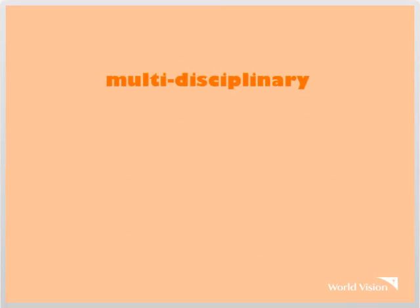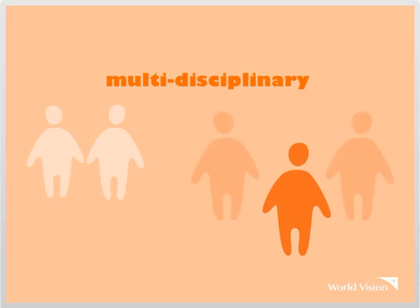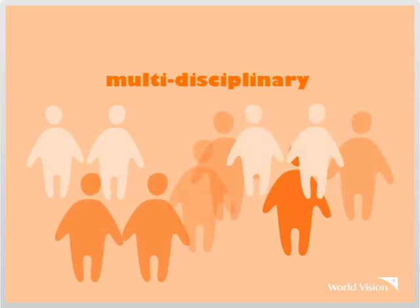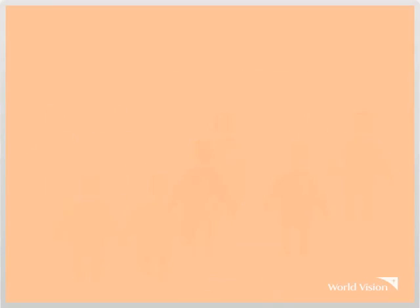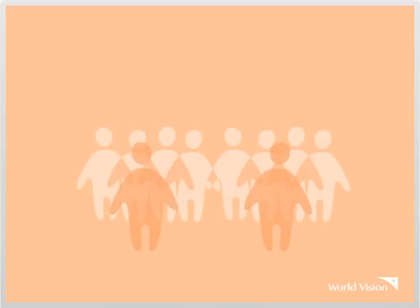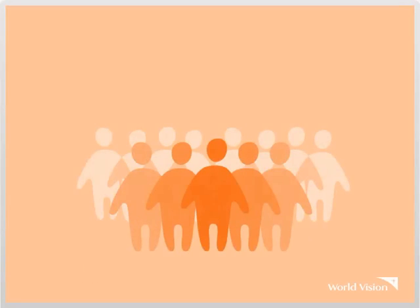Multidisciplinary? Yes, it takes a village, or in this case, leaders from across your national office, including operations, program quality, sponsorship, people and culture, IT, and all the technical sectors. Working together, transforming your field environment will focus on change in these six areas.